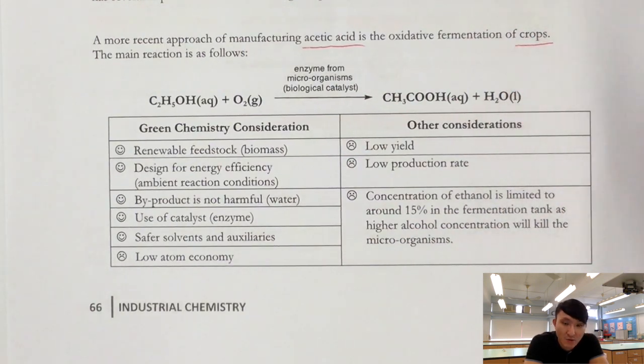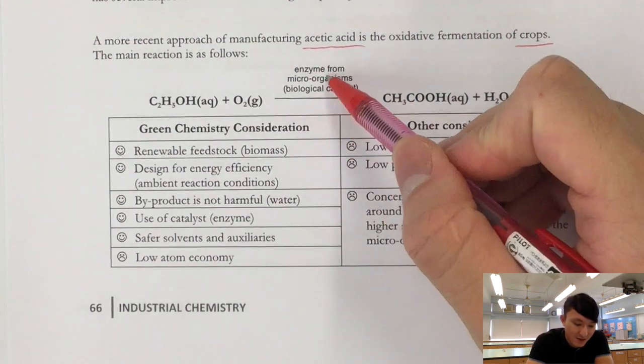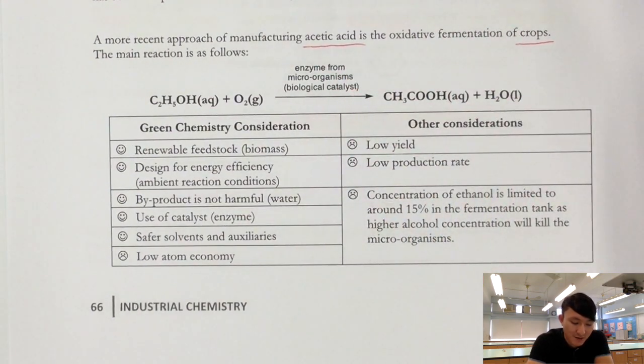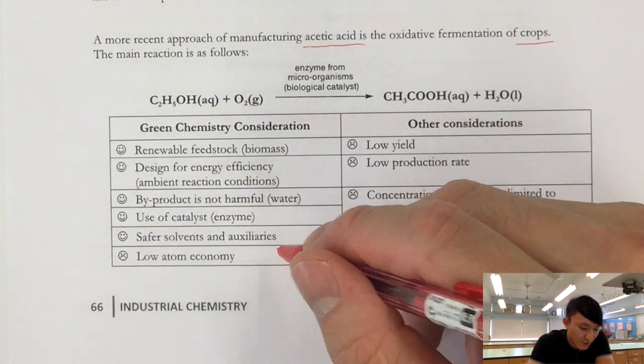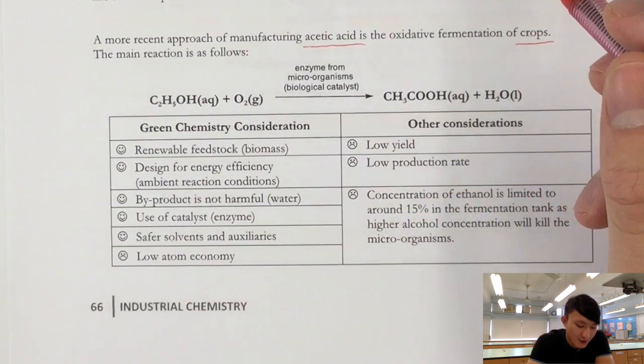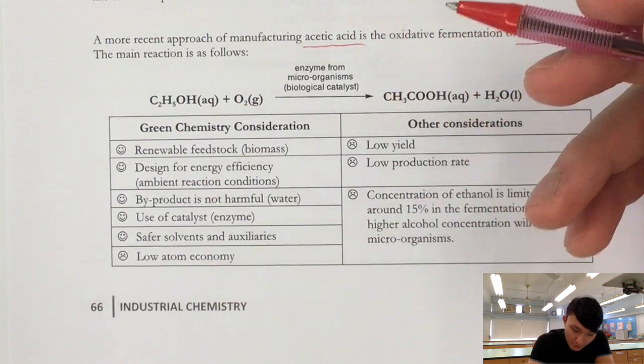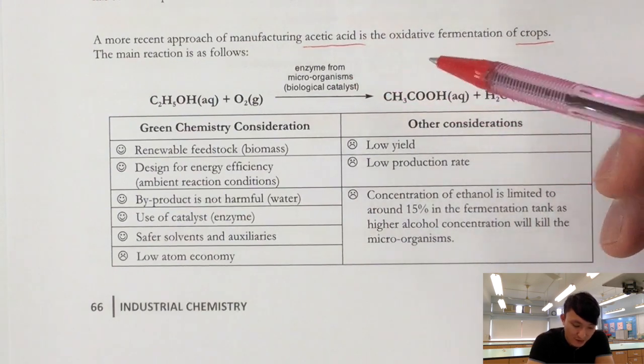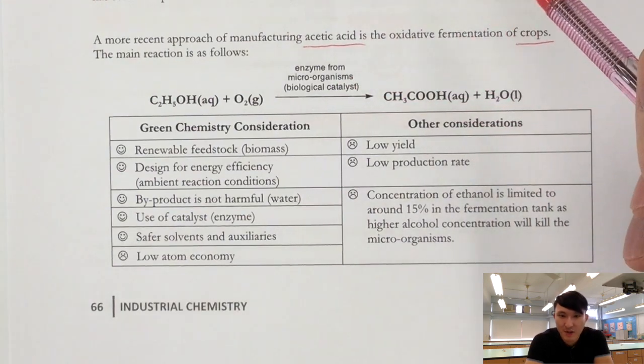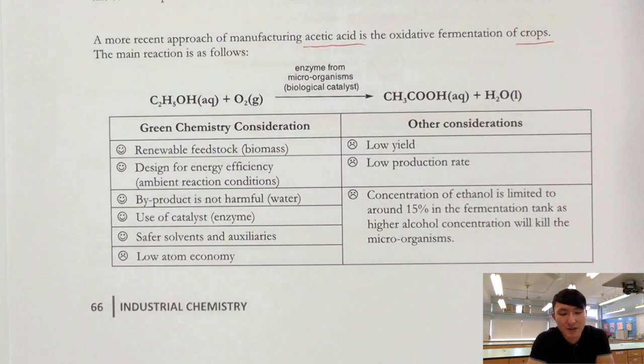Number three, byproduct is non-harmful water. So only water being the byproduct is produced, which is not harmful. Number four, the use of catalyst, which is enzyme. Here enzyme from microorganism, acting as a biological catalyst. Down here, safer solvents and auxiliary. Solvents, for reaction-involving microorganism, it is mostly water-based with some buffering solute. But it is definitely not toxic. Auxiliary, in order to make sure the microorganism can grow and thrive and at the same time controlling their population, I believe that there are some chemicals added into it to ensure rapid growth but not overgrown.